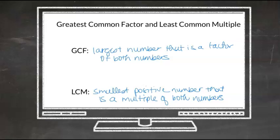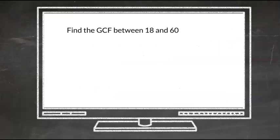Let's look at an example. We want to find the Greatest Common Factor between 18 and 60. In order to do this, I'm going to find the prime factorization of both of these numbers. Let's start with 18. 18 is 2 times 9. 9 is 3 times 3. So the prime factorization of 18 is 2 times 3 times 3.